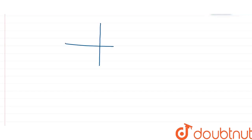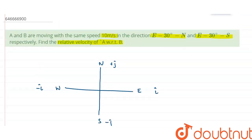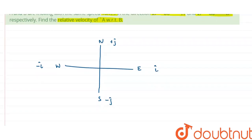The coordinate system is set up like this: north is the plus j-cap direction, south is minus j-cap, east is plus i-cap, and west is minus i-cap. They say particle A is moving at 10 meters per second in the direction of east 30° north, meaning A makes a 30° angle with the east axis.